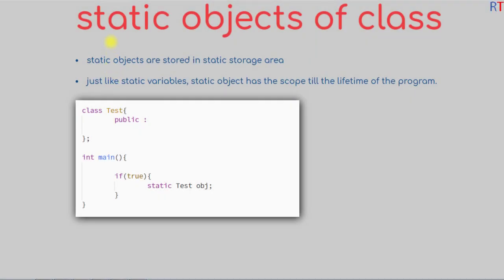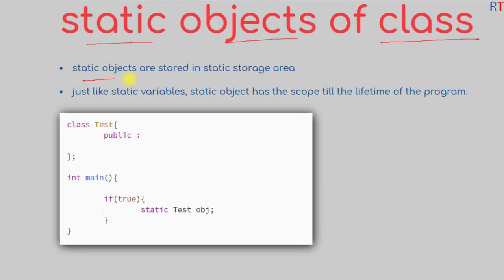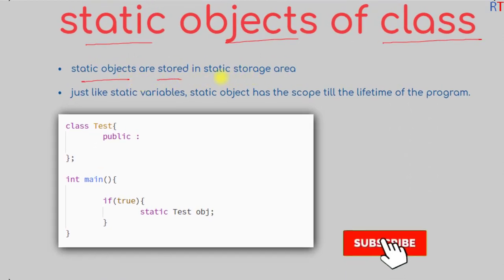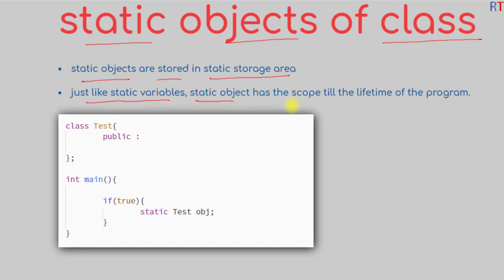In this video we're going to talk about static objects of a class. Static objects are stored in the static storage area, and just like static variables, a static object has scope till the lifetime of the program. As an example, here we have one class called test, and inside the main method we have created one static object of that class.